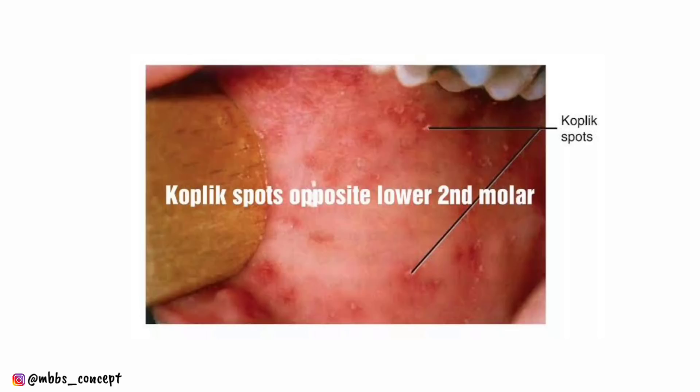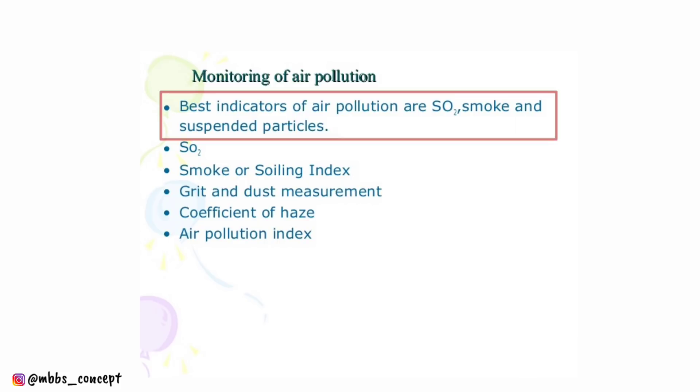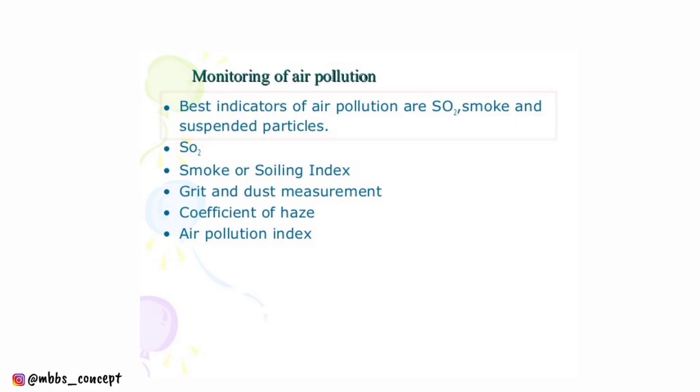In another question, a spot and its location were described without an image, and you had to identify the spot — it was the Koplik spot. Another question asked about the indicator of air pollution, and one of the options contained SO2, smoke, and suspended particles, which was the answer.